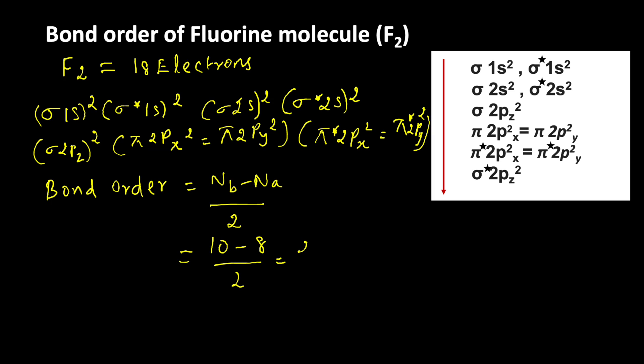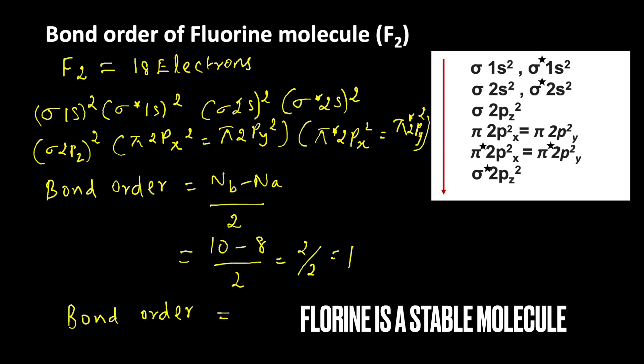10 minus 8 divided by 2 equals 2 divided by 2, which equals 1. So bond order of fluorine molecule is 1. It means fluorine is very stable and it exists. Thanks for watching.